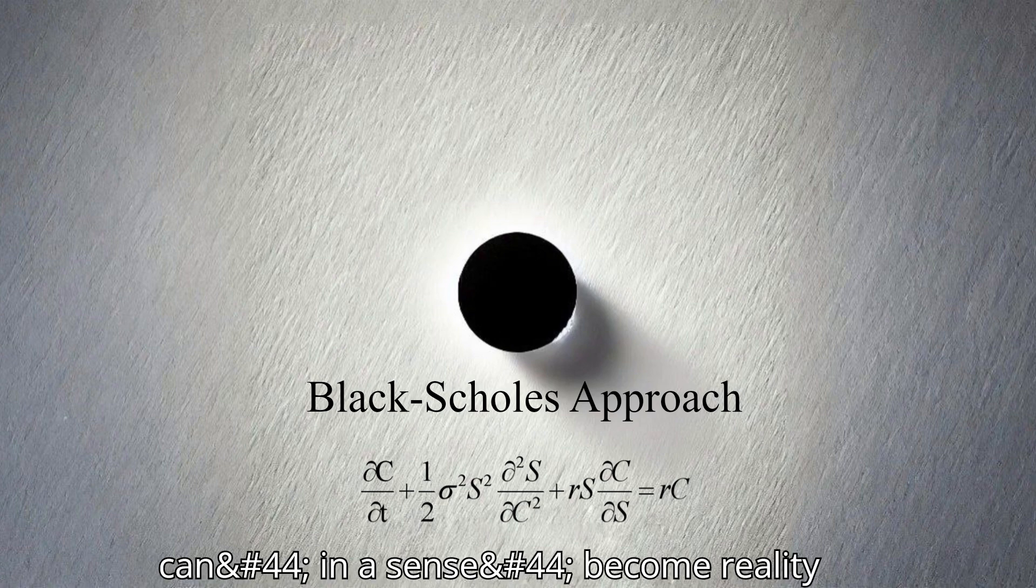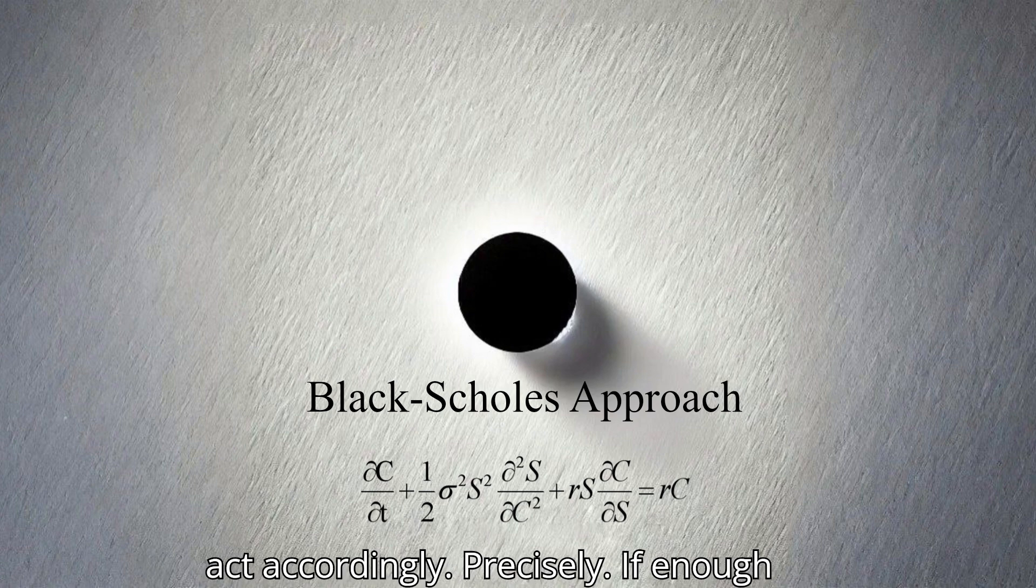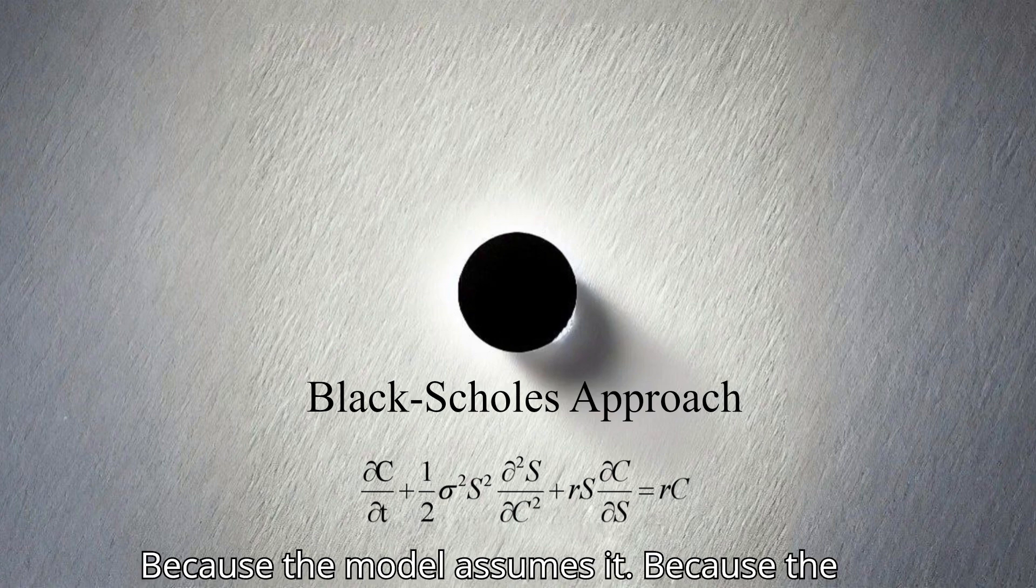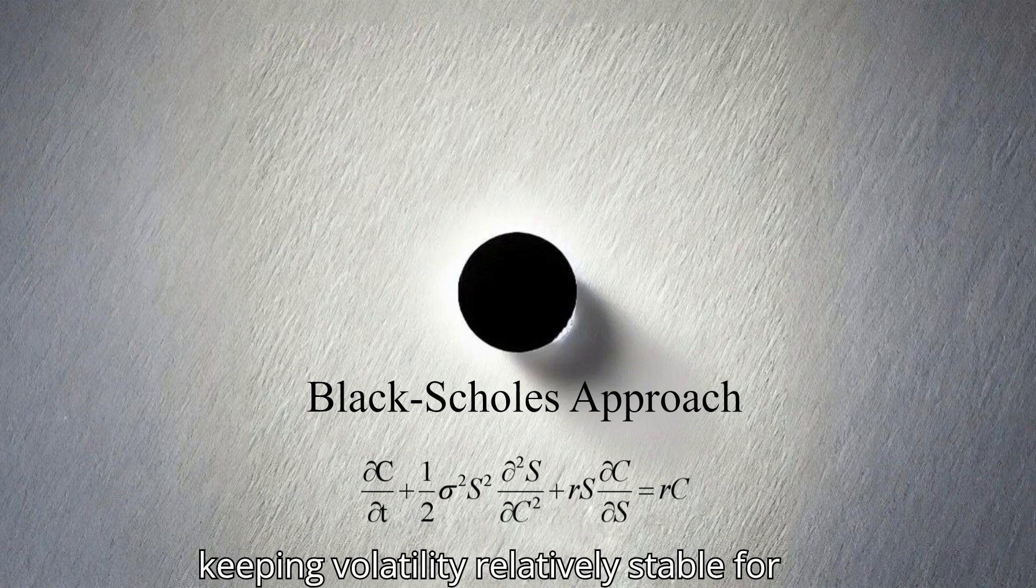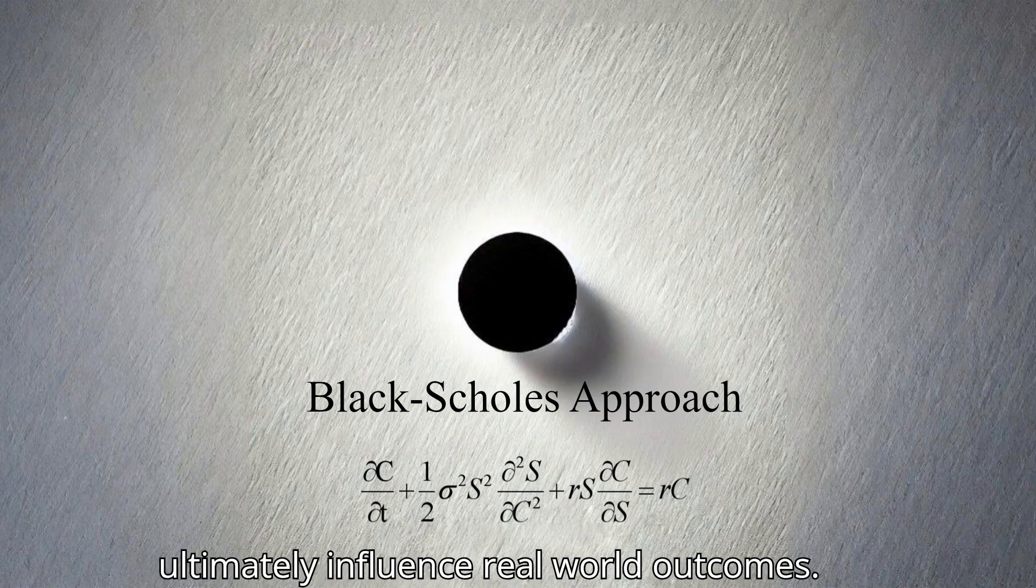This concept is crucial to understanding the interplay between models and reality in financial markets. It suggests that the widespread adoption of a model can influence market behavior in a way that reinforces the model's assumptions, even if those assumptions aren't entirely accurate. So the model's predictions can, in a sense, become reality simply because people believe in them and act accordingly. Precisely. If enough market participants believe that volatility is constant because the Black-Scholes model assumes it to be so, their trading decisions might create a self-stabilizing effect, keeping volatility relatively stable for a period of time.